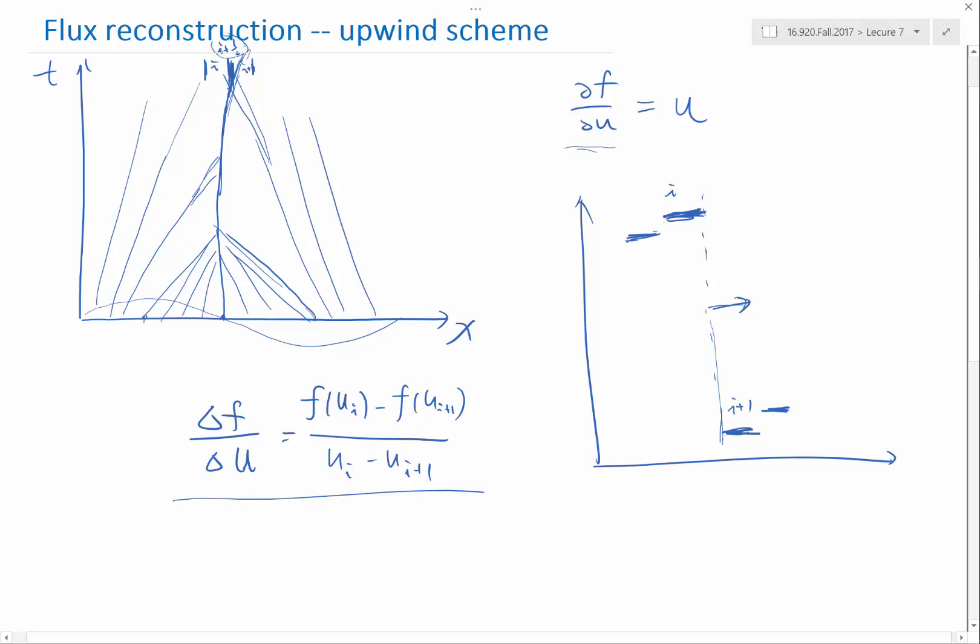It's just that when there is a small discontinuity, Ui minus Ui plus one is small, then this is pretty much DF over DU, which is the speed of the characteristics. Right? When the delta U is huge, it's the speed of the shock. When delta U is infinitesimal, it's the speed of the characteristics.